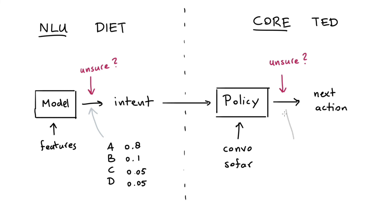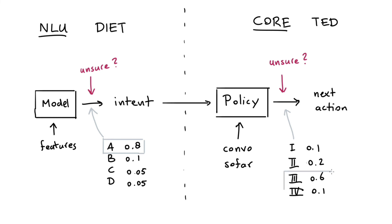Something really similar will be happening with TED. The main difference is that instead of an intent, we might have different actions we'd like to predict. As you might notice, these confidence numbers are designed so that they sum up to 1 — in that sense, it's like a probability value. Because of that property, a heuristic for deciding whether to fall back is to grab the top prediction — intent A here, or action 3 on the TED side — and check if that confidence is larger than or equal to a certain threshold.